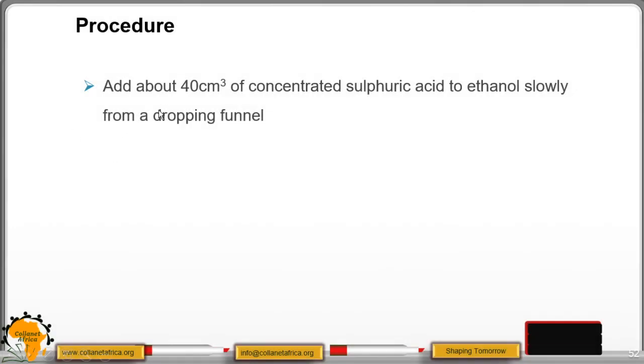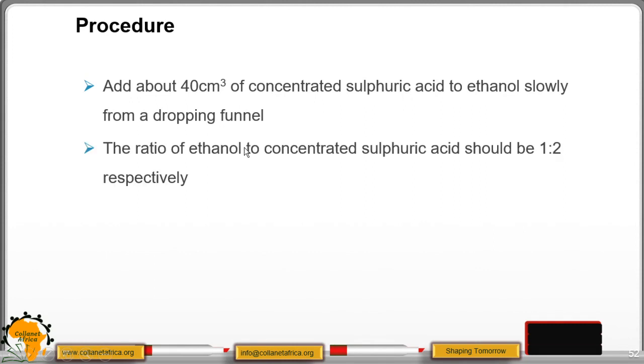Add about 40 cm³ of concentrated sulfuric acid to ethanol slowly from a dropping funnel. Then the ratio of ethanol and concentrated sulfuric acid should be 1 to 2 respectively. Remember, it has to be concentrated. If you use dilute sulfuric acid, you will not be able to get the product because dilute sulfuric acid is not used as a dehydrating agent.